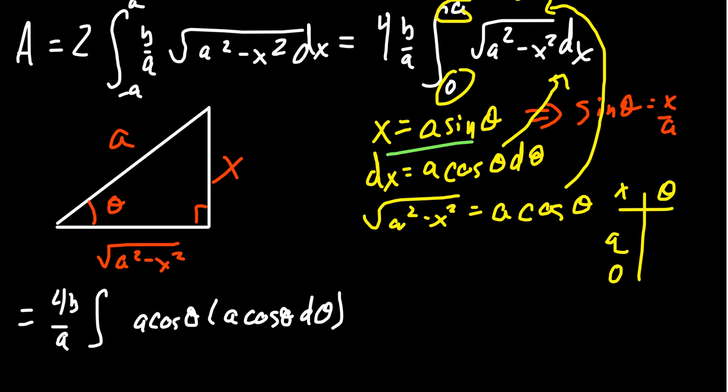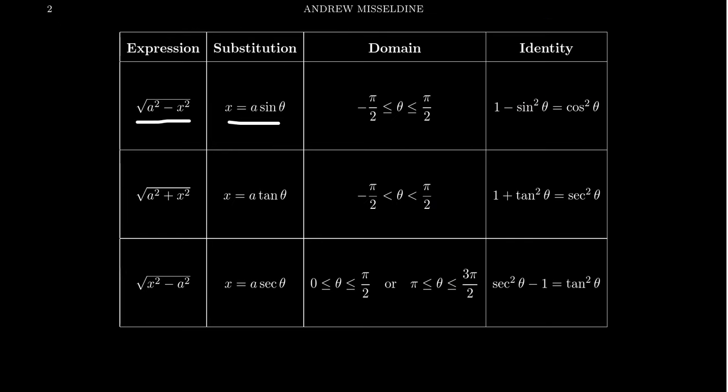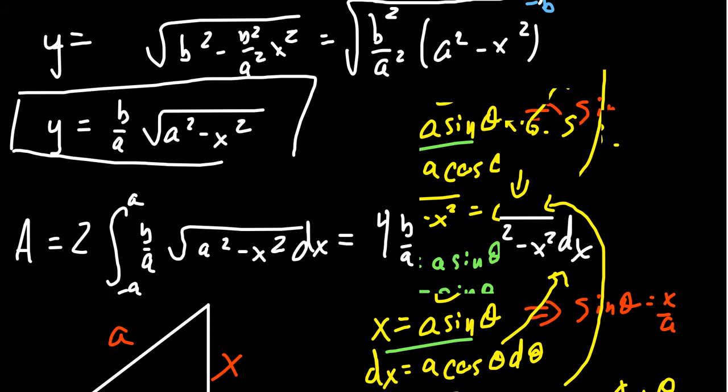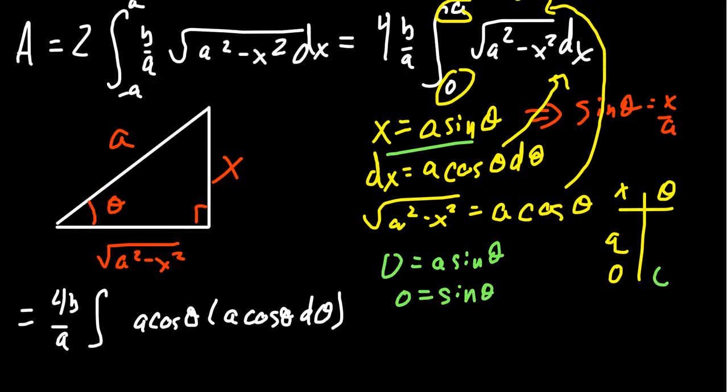Divide both sides by a, you get 0 equals sine theta. When does sine equal 0? Going back to our domain issue, sine actually equals 0 a lot, but inside this domain, sine would only be 0 at the angle 0 itself. So when x is 0, theta equals 0.